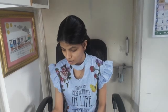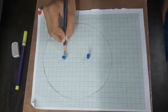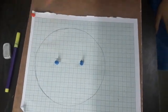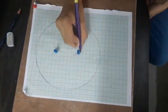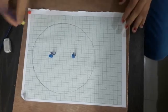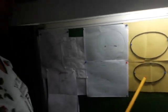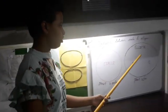Now let us remove the string. A circle can be drawn from any one given point, whereas an ellipse can be drawn from two points. These two points are called the foci of an ellipse. Let us label the foci of the ellipse which was constructed by us. This is F1 and this is F2. You may also use a sketch pen for this purpose so that you may understand it very clearly. This is how our ellipse looks after construction.